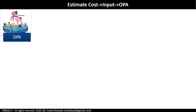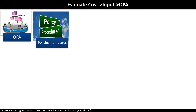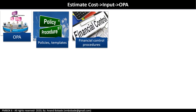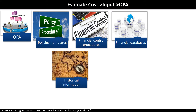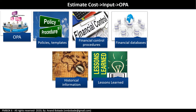Organizational process assets that may influence cost estimation include cost estimating policies and templates, existing cost policies and procedures, financial control procedures, financial databases with old project finance details, historical information from similar projects, and lessons learned registers containing past cost estimation issues and how they were resolved — all of which can help improve estimation accuracy.